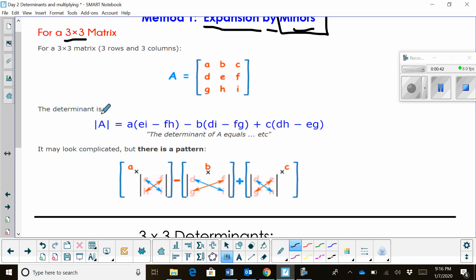So to find the determinant, and these absolute value bars over the matrix name actually means the determinant. So find the determinant.